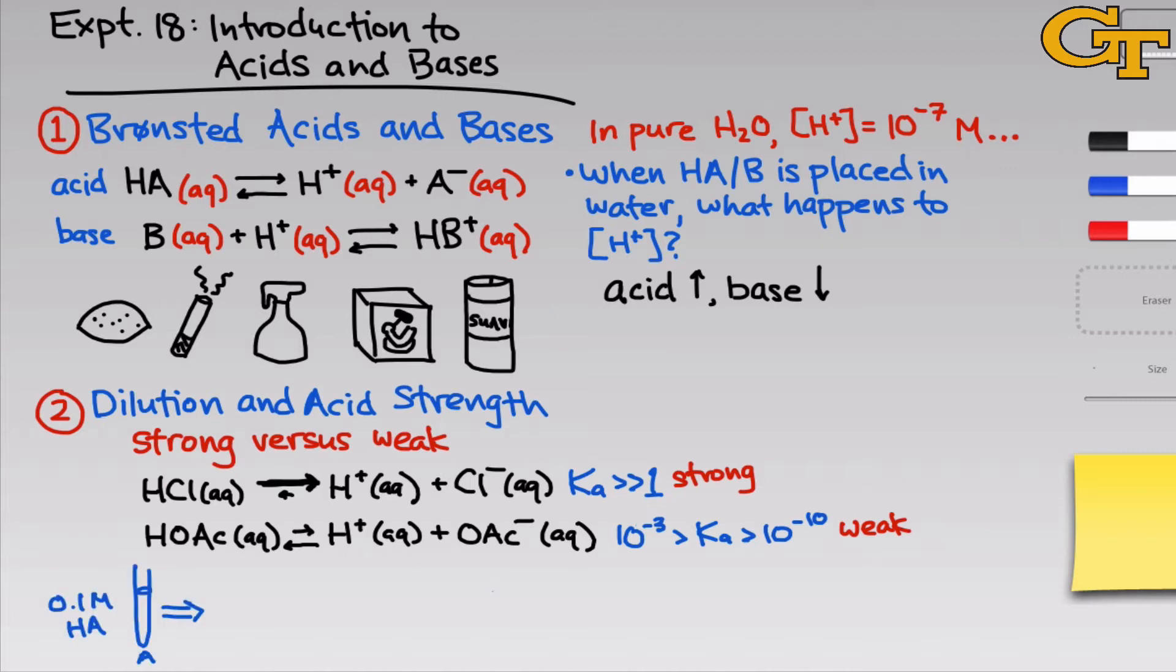In the second part of this experiment, we'll start with a 0.1 molar solution of an acid in water, and I've called that A here, and we'll measure the pH. From there, we'll take two milliliters of that A solution, and dilute it with 18 milliliters of water to a total volume of 20 milliliters. This is a 1 to 10 dilution of solution A, so the concentration of HA is now one-tenth of what it used to be. We'll measure the pH, and then we'll take two milliliters of that solution B, and dilute that with 18 milliliters of water once again. So this is a 1 to 10 dilution of solution B, and with respect to solution A, it's a 1 to 100 dilution.